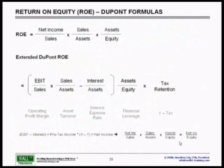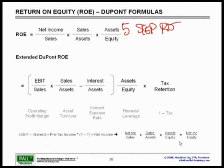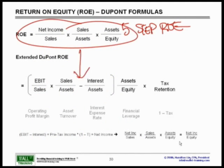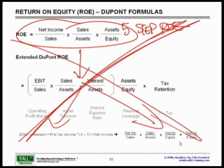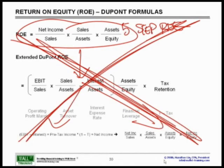Now let's turn to the five-step ROE ratio, also called the five-step DuPont ratio. It extends the three-step and you can examine exactly how the numbers are constructed, but honestly you could put a big X on this — it's not really used in real life.